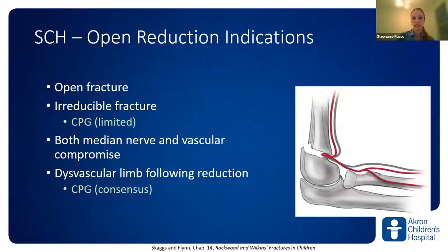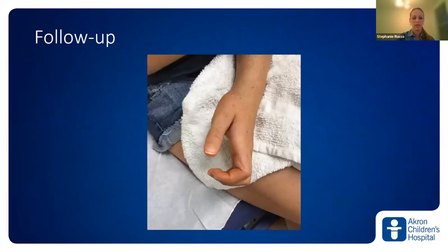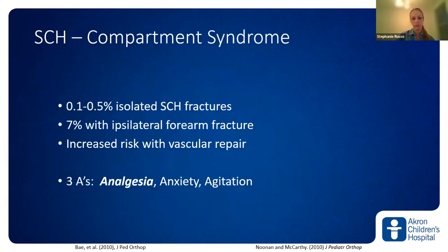Times when you may need open rather than closed reduction: if it's already an open fracture, if it's irreducible, if soft tissue is interposed, if there are both median nerve and vascular compromise — there's a high rate of those structures being entrapped. And certainly if the limb remains dysvascular after reduction. This patient was discharged with oxycodone and came back with her forearm, wrist, and fingers fixed in posture — she had a missed compartment syndrome. Over-the-counter pain medications should be adequate for these. Kids don't present with the classic Ps — look for the As: increasing analgesic need, agitation, and anxiety.